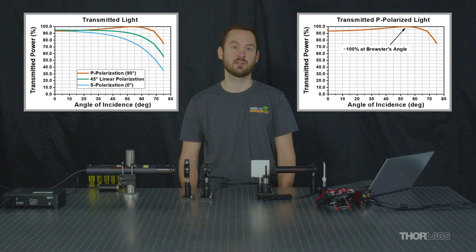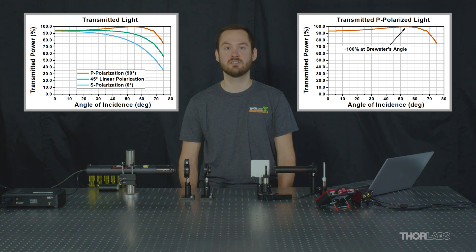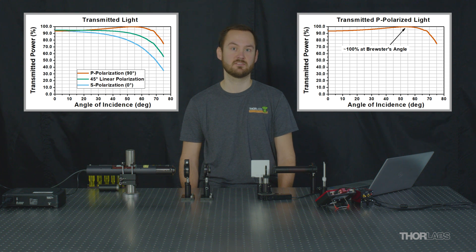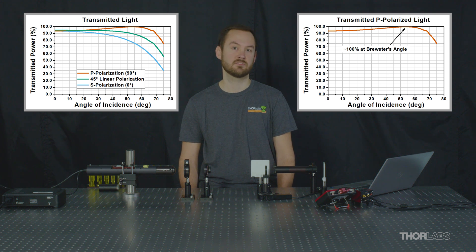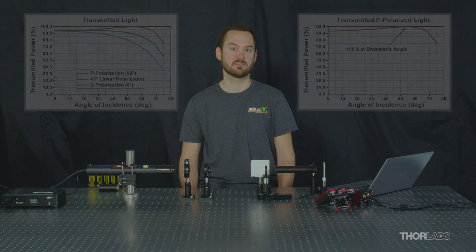Let's take a closer look at the transmission plot for P polarized light. We can see that we achieve near maximum transmission at approximately 57 degrees. Since we achieve maximum transmission at about 57 degrees, this implies that there is a minimum reflection at this point.